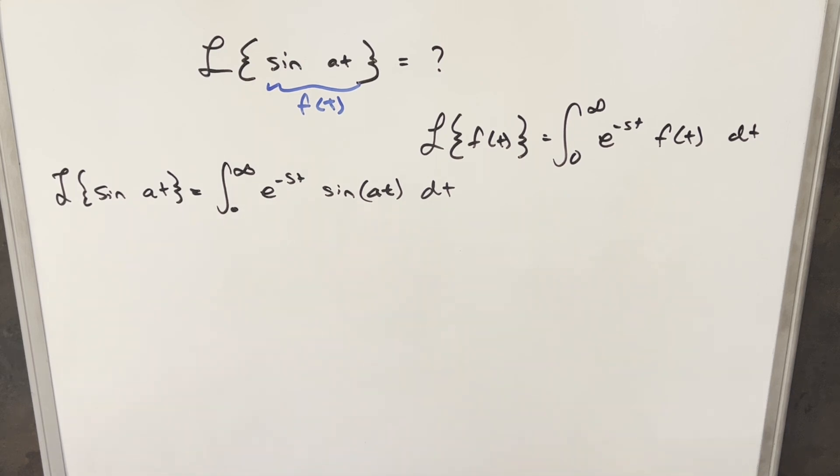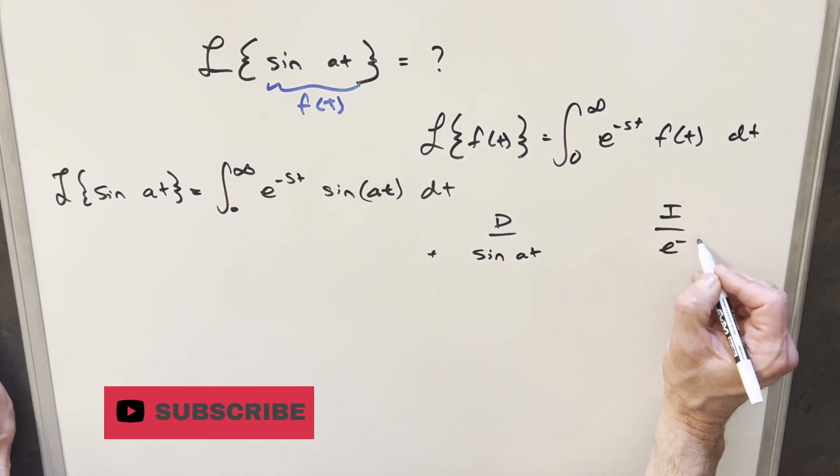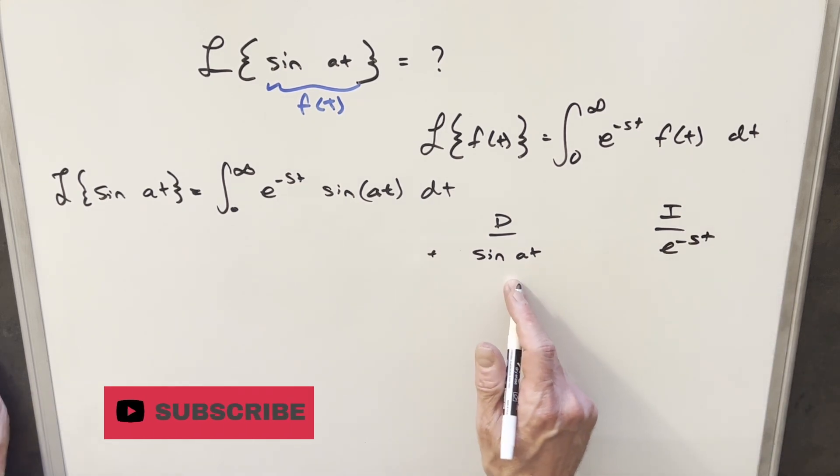So for this one, what I'm going to do is we're going to use integration by parts, or the DI method. And what I'm going to do is differentiate, we could do this one either way probably, but I'm going to differentiate sine of at, and we'll integrate e to the minus st. And we'll do this a few times.